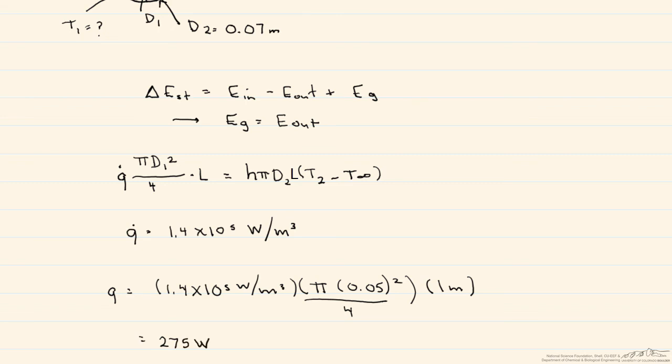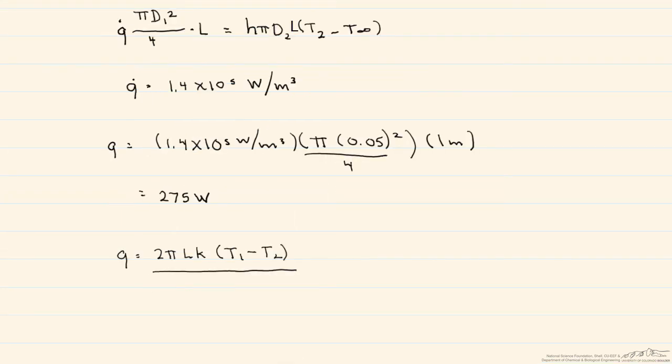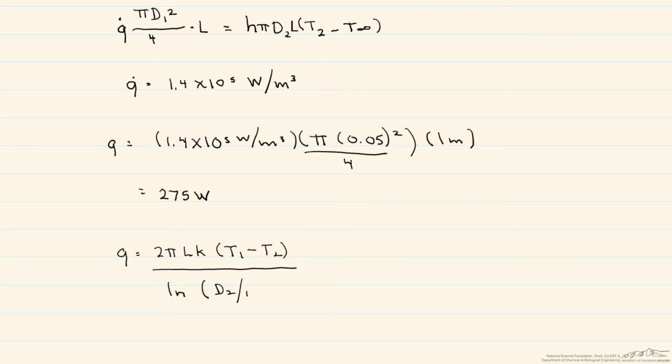Why do we solve for it? Because that heat transfer rate stays constant from the outside of the generating rod through the sleeve and into the convection. So now all we need to do is that Q is equal to conduction through that sleeve, which is equal to 2 pi L times the thermal conductivity of the sleeve, times T1 minus T2 divided by the natural log of the ratio of the radii, or in this case D2 over D1.